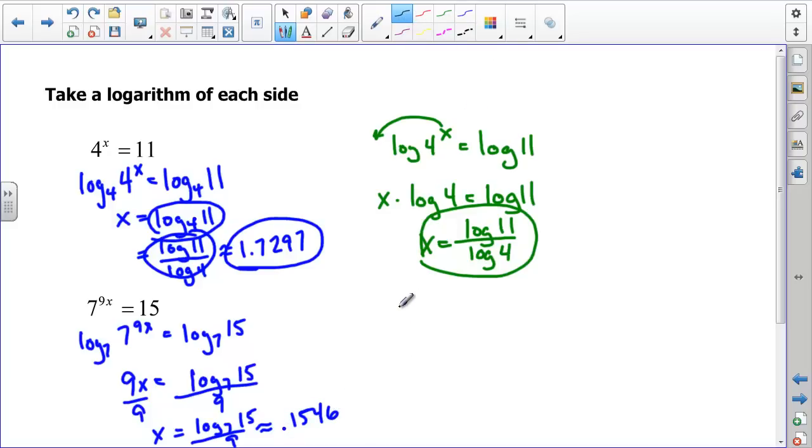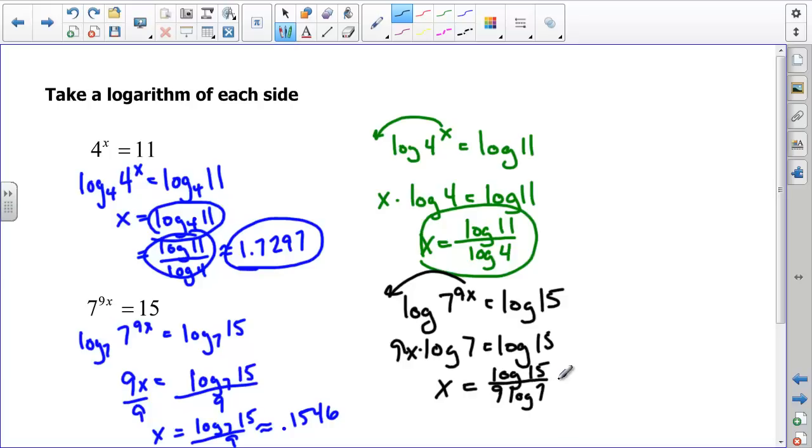As I said earlier, if I don't have a graphing calculator that does log base B or whatever, I can just take the log of 7 to the 9x and the log of 15. Take this exponent, pull it out front, and say 9x log 7 equals log 15. Now, 9 times x times log of 7, I can just divide by 9 log of 7, and I would get log of 15 over 9 log 7, and again, that's 0.1546. So, there's our two methods for solving exponential equations.